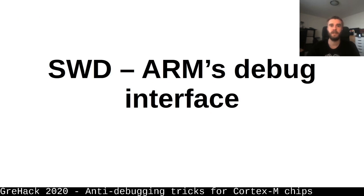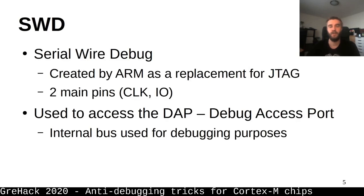Before we dig into the countermeasures, we first need to understand how the debug interface on these chips works. We have SWD, which is ARM's alternative to the JTAG interface. SWD uses two wires: the clock and I/O. This I/O is bi-directional, so usually the debugger sends a command and the device replies directly on the same data line. It is always the debugger that drives the clock. This SWD interface is a bridge between the physical world of the debugger and the internal debug bus within the core of the chip.